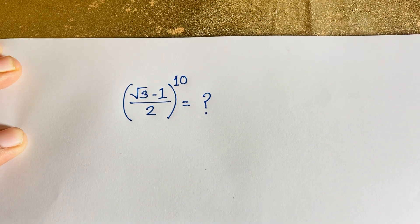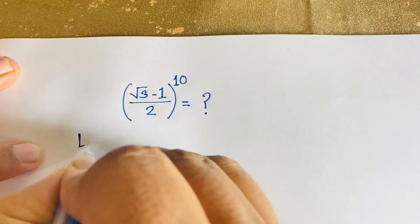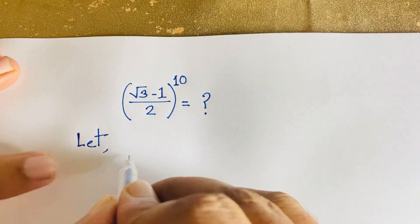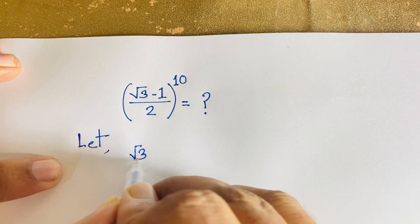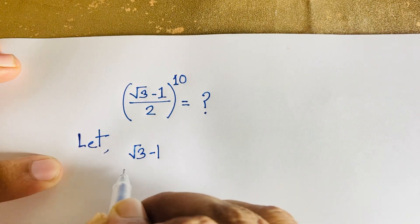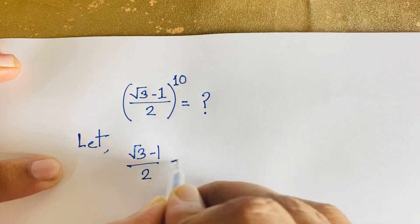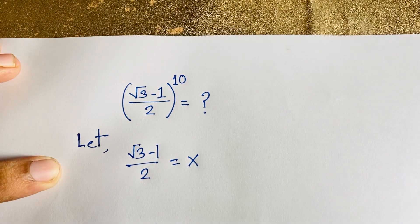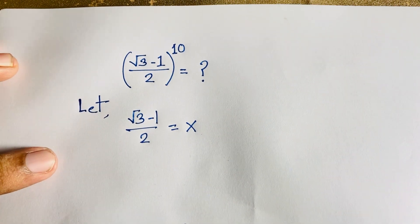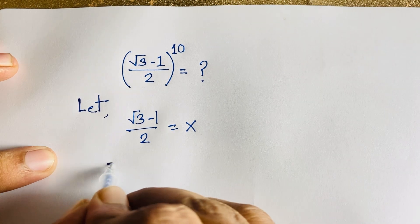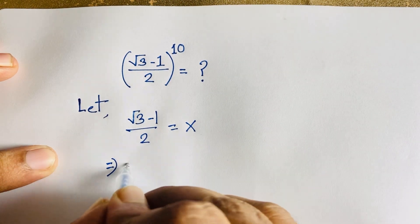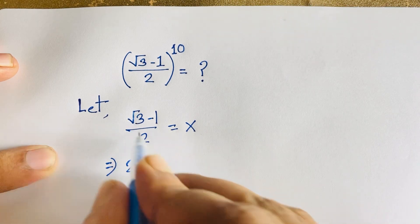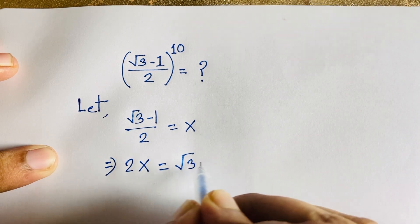To solve this question, first of all we let x equal to (√3 minus 1) over 2. So we can say 2x is equal to √3 minus 1.